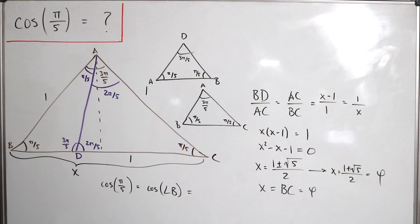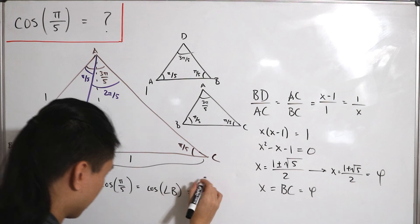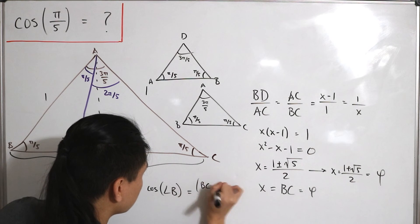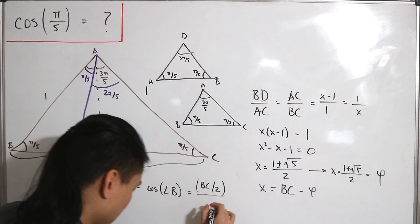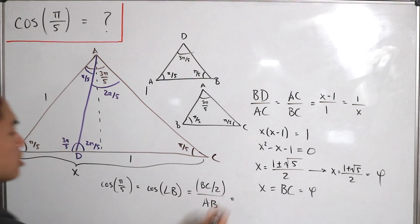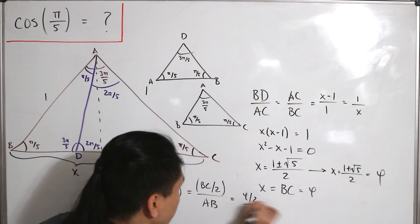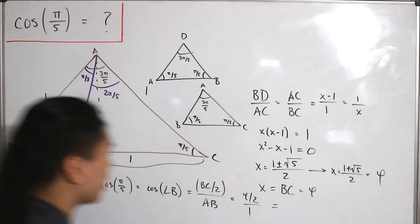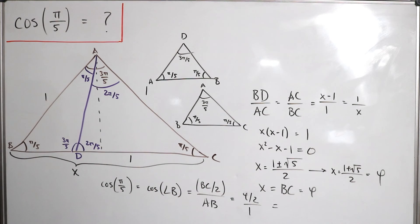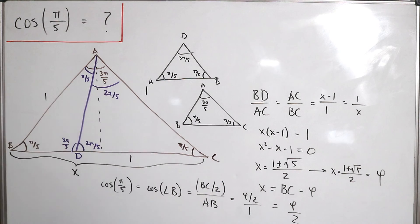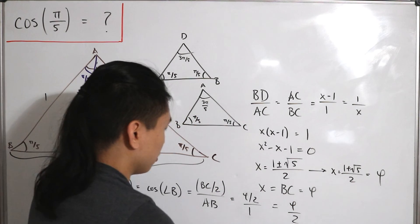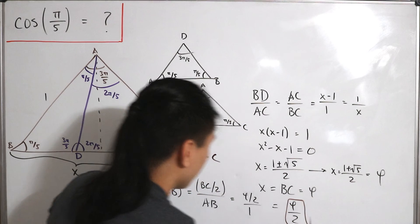In other words, this is the length of line segment BC divided by half, so we have two equal triangles of the entire thing. That means we have BC divided by 2, and then the hypotenuse length, which is line segment AB. This leaves us with just φ divided by 2, and then AB is equal to 1. Therefore, cosine of π/5 is equal to φ divided by 2, which completes the evaluation of cosine of π/5 in a different approach without having to use complex analysis.